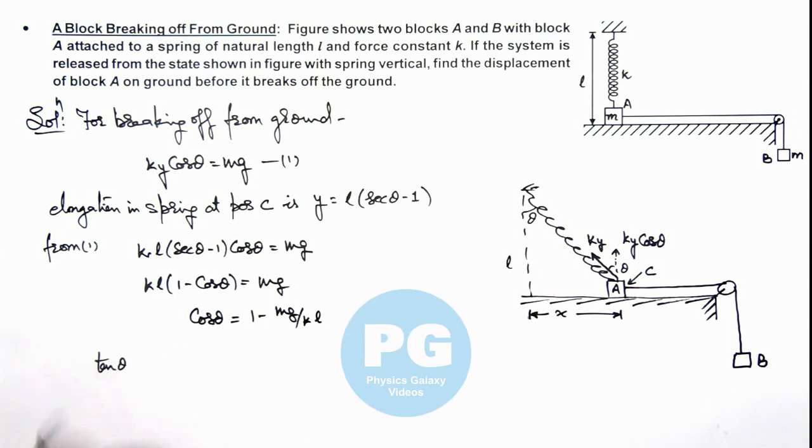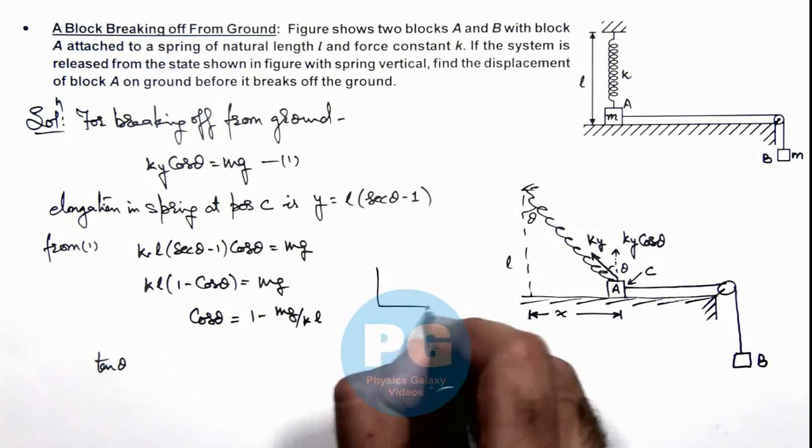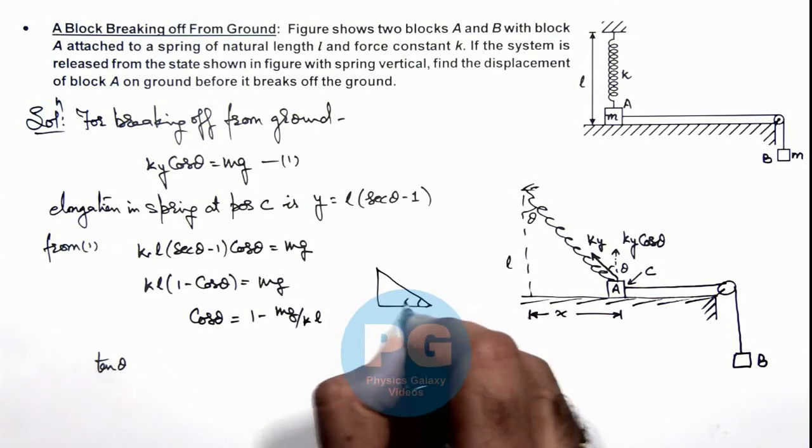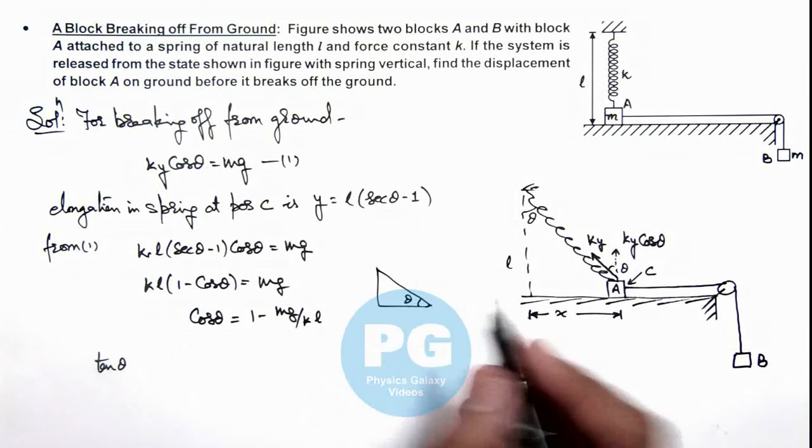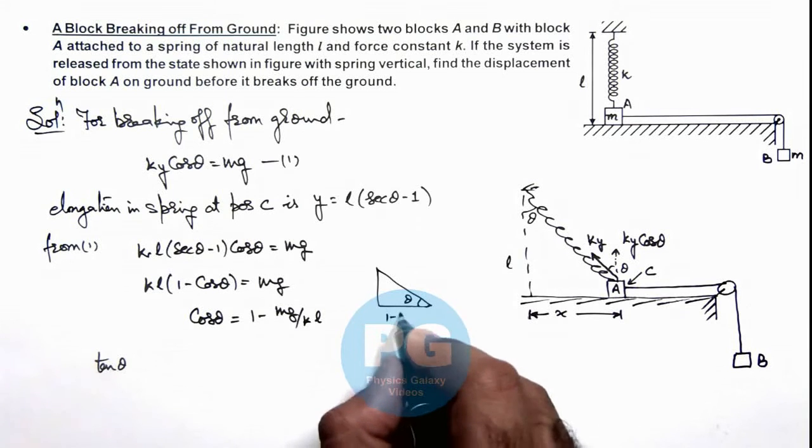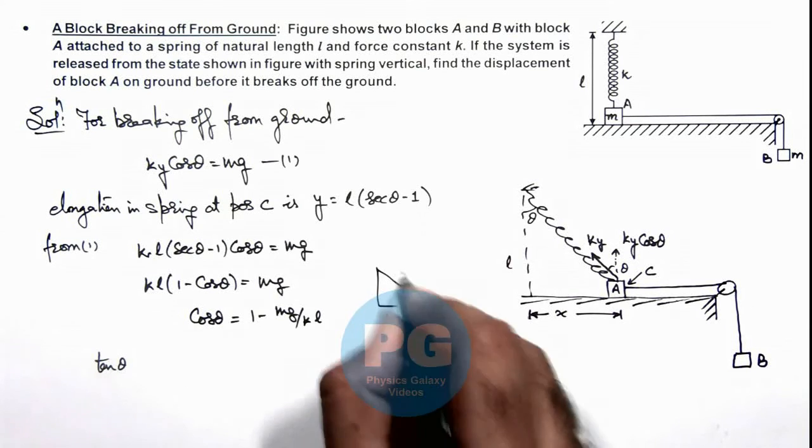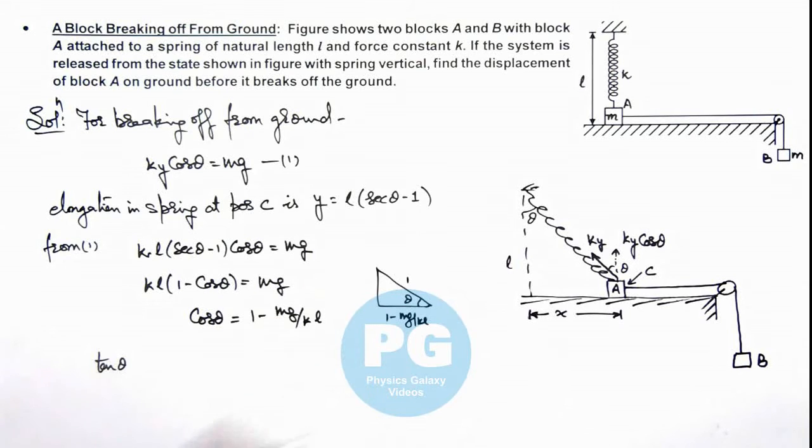Trigonometrically we can get the value of tan theta by drawing a triangle. If this angle is theta, in this situation cos theta is this by this, so we can consider this as 1 minus m g upon k l and this is 1. So tan theta also you can calculate...